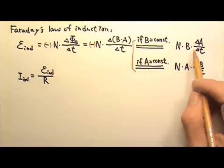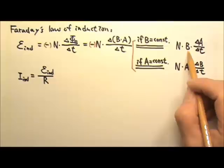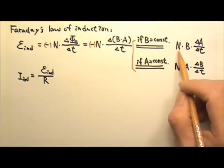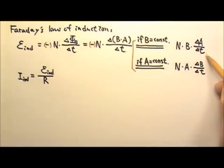If b is a constant, we can take the b out of the delta, so this will be n times b times the rate at which the area changes.